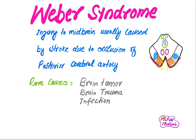Weber syndrome occurs due to the occlusion of perforating branches of the posterior cerebral artery. It occurs due to injury to the midbrain, usually caused by stroke. Rare causes include brain tumors, brain trauma, and infections.